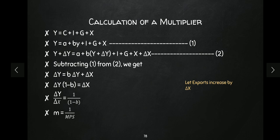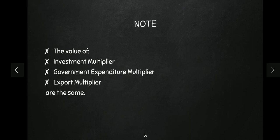Now you must have observed that the value of the investment multiplier, the value of the government expenditure multiplier, and the value of the export multiplier are exactly the same — all three equal 1 upon marginal propensity to save. Always.